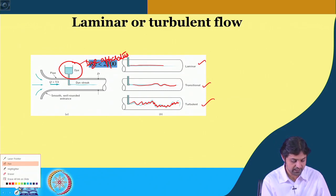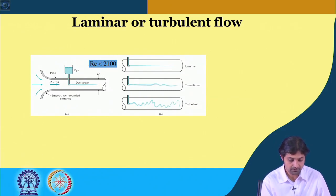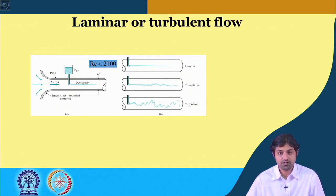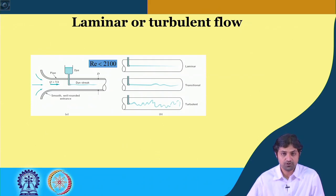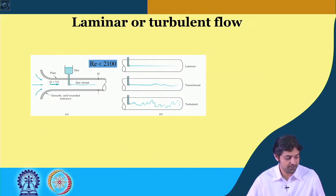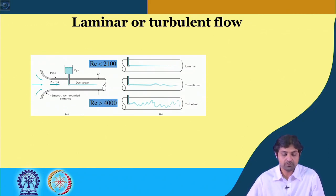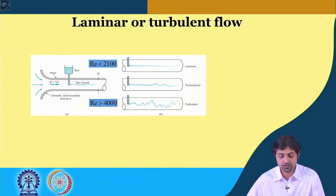It has been found that for laminar flow the Reynolds number should be less than 2100 — this is an important value to remember. For turbulent flow in pipes, the Reynolds number must be greater than 4000. For the range between 2100 and 4000, the flow is transitional.